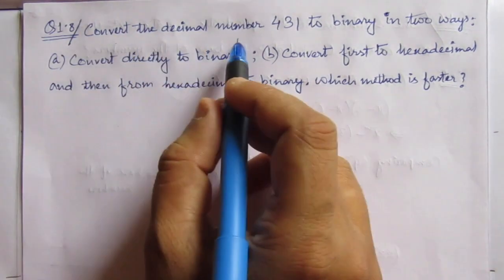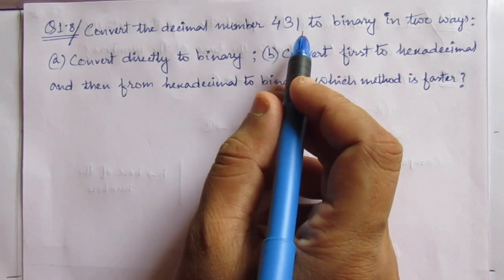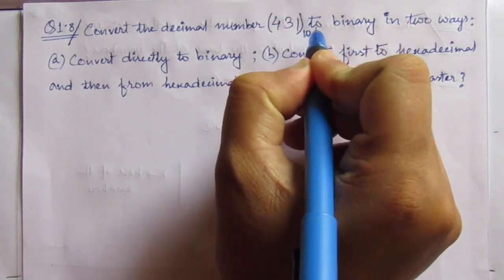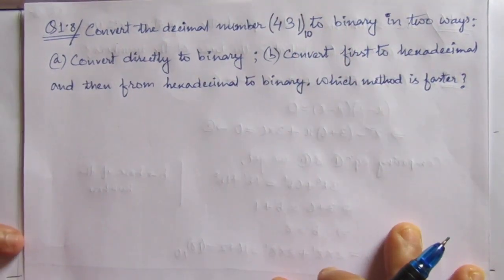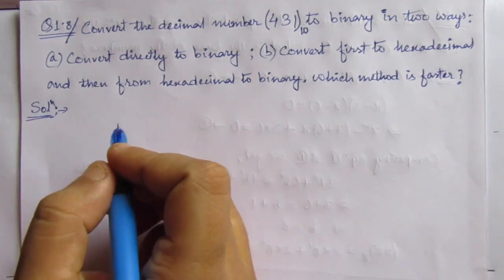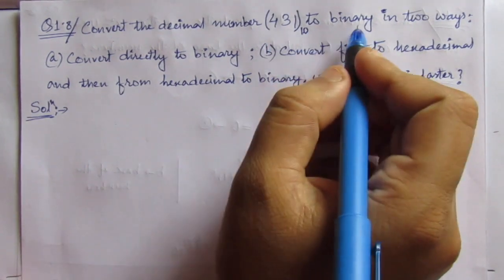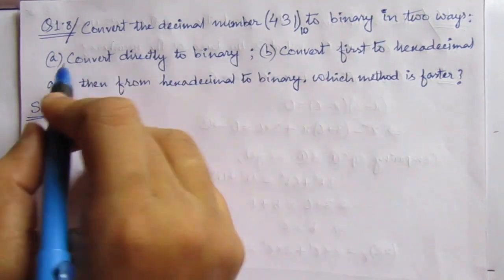The question is convert the decimal number 431 to binary in two ways. That means we have to convert this decimal number into binary number by following these two options.